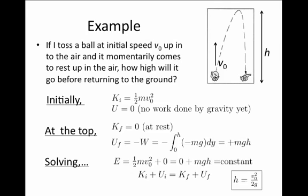And if we look at that expression, we can actually solve for how high the ball will go up in the air once we know at what speed we launched it. And we find that the height h will equal V0 squared over 2g, which is actually an expression we derived in a much more complicated way using one-dimensional kinematics early on in the semester. But we were able to solve it more quickly using the concept of conservation of energy.